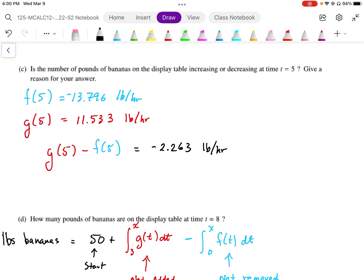So we can say that the number of pounds of bananas on the display table is decreasing at t equals 5, because when we add the positive rate and the negative rate together, we get a net negative rate.